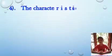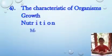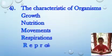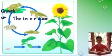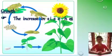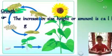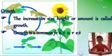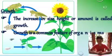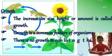Characteristics of organisms: growth, nutrition, movement, respiration, and reproduction. Growth — the increase in size, health, or amount is called growth. Growth is a common feature of organisms. There is no growth in non-living things.